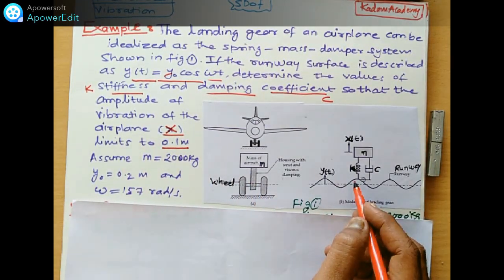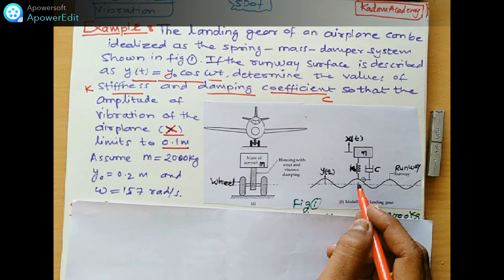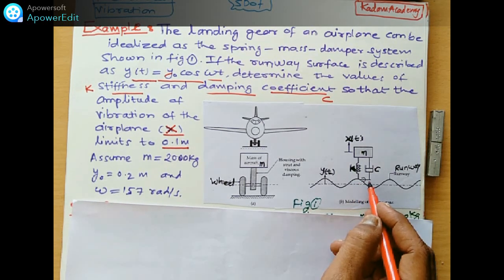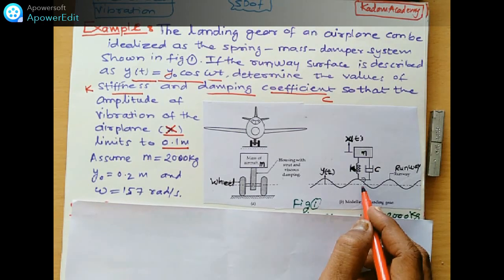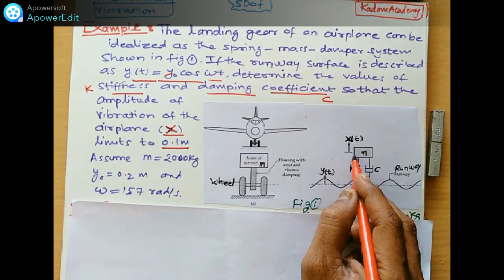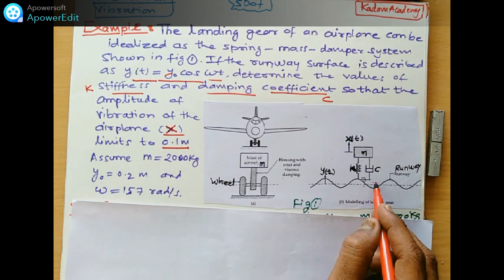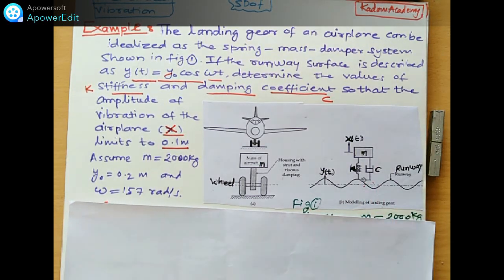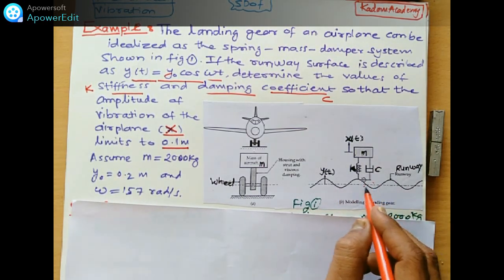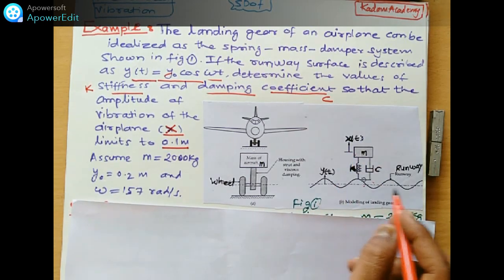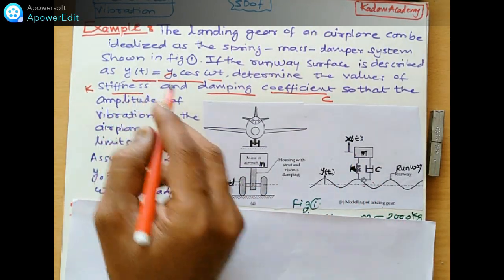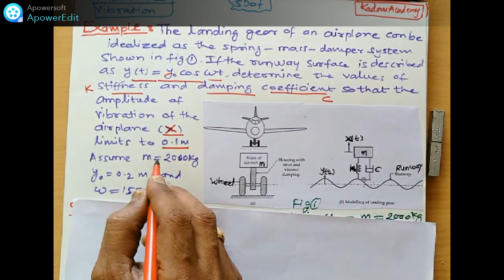This is the case of forced vibration with the support excitation. So this is the excitation of the support. The excitation to the surface. So y(t) and x(t), this y(t) and x(t) that we will find out. The value of x is given.